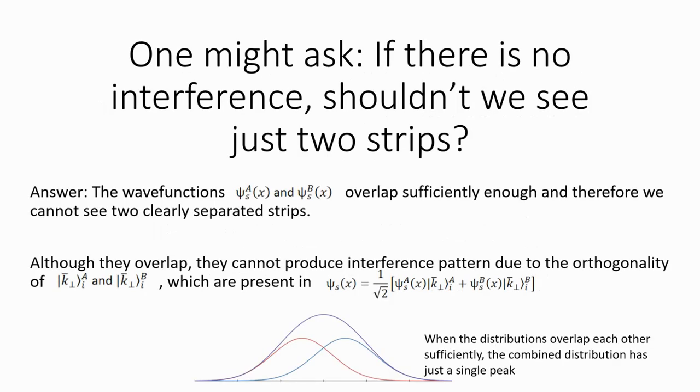One might ask, if there is no interference, shouldn't we see two strips instead of a broad distribution? This is because the wave functions overlap sufficiently enough, therefore separated strips are not visible.